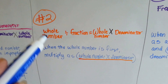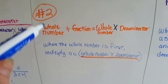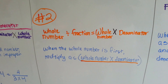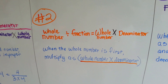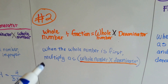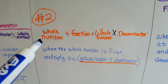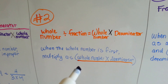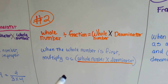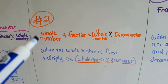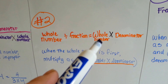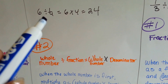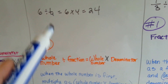So if you can write this into your notes as rule number 2, this is going to help you when you divide fractions. When the whole number is first, you multiply it as the whole number times the denominator. Whole number times the denominator.